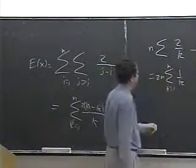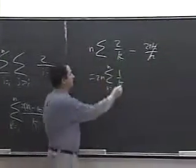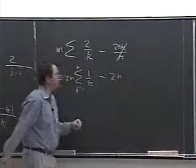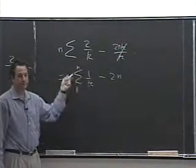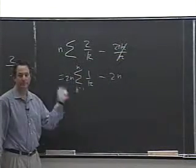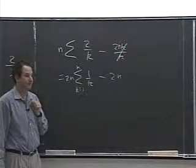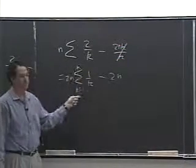k equals one through n. I'll carry along that thing. What's this sum? Nobody recognizes the sum?